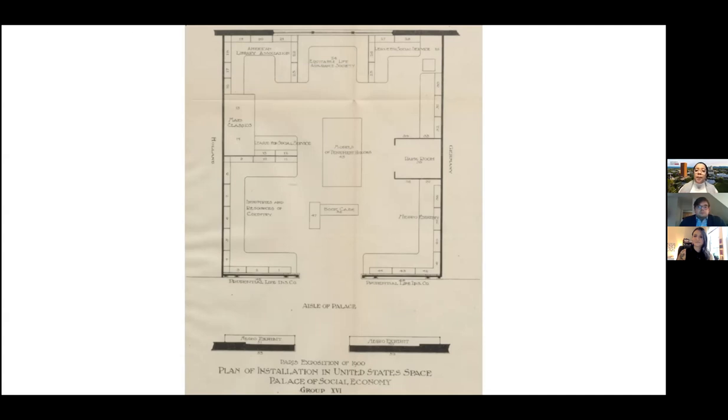The American Negro exhibit occupied a fourth of the entire building and was strategically placed at the entrance — right as you walked through the door. Adjacent to the exhibit were models of tenement houses and, across the way, an exhibit on industries and resources of the country, placing the American Negro exhibit in direct relation to themes of industry and resources.